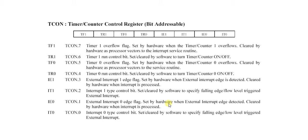TF1 is cleared by hardware when the processor vectors to the interrupt service routine (ISR). It is cleared when the processor vectors to execute the interrupt service routine located at program address 001BH. So it is simply the Timer1 overflow flag.